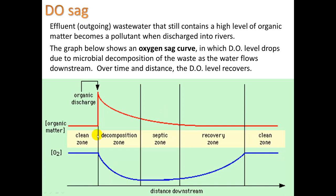Looking at this graph, the horizontal axis is distance downstream, and we have two variables: organic matter and oxygen level in blue. Before the discharge point, you have very low organic matter and very high oxygen. Then comes the discharge with higher-than-normal organic content. As you get further away, organic levels decrease because decomposition is happening as water flows downstream, eventually returning to baseline — that's the clean zone.